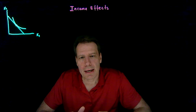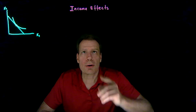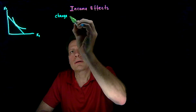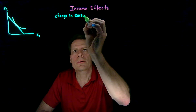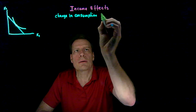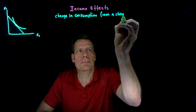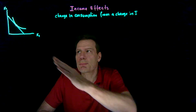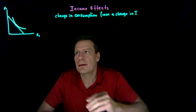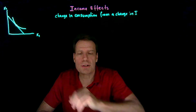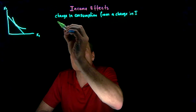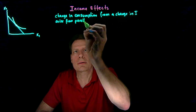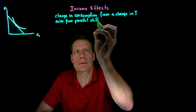The consumption changes that happen as a result of changes in income are called income effects. So an income effect is a change in consumption from a change in income. We know that changes in income cause parallel shifts in budgets — they don't change prices, and the slope of the budget is just the ratio of the prices. So these income effects arise from parallel shifts in budgets.